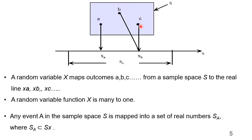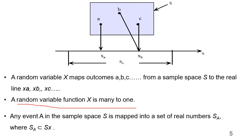If A is mapped to XB, and both outcomes B and T are mapped to a single real number XB on the line X, then XA, XB are values on the real line X. The event space S is mapped into a real number XA. A very important observation is that a random variable function X can be many-to-one. Here, two outcomes are mapped to a single variable XB, so we call it many-to-one.